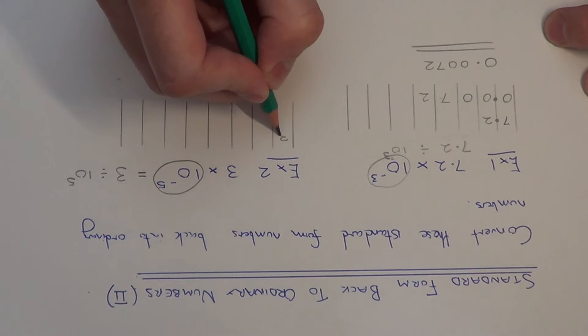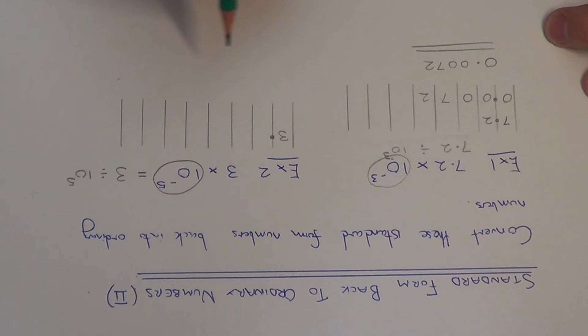So again if we put the 3 onto the columns below, the decimal point comes after the 3. So if we divide it by 10 five times we need to move the digits 5 places to the right.